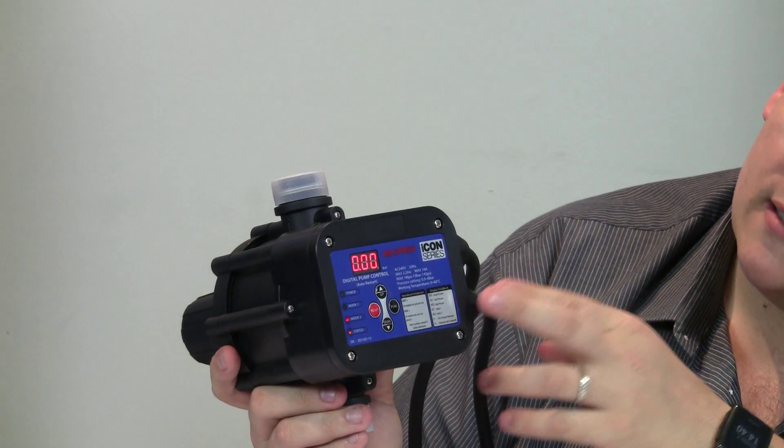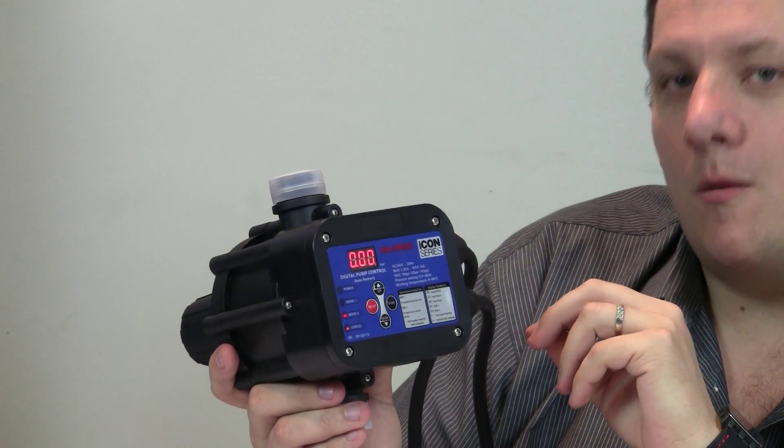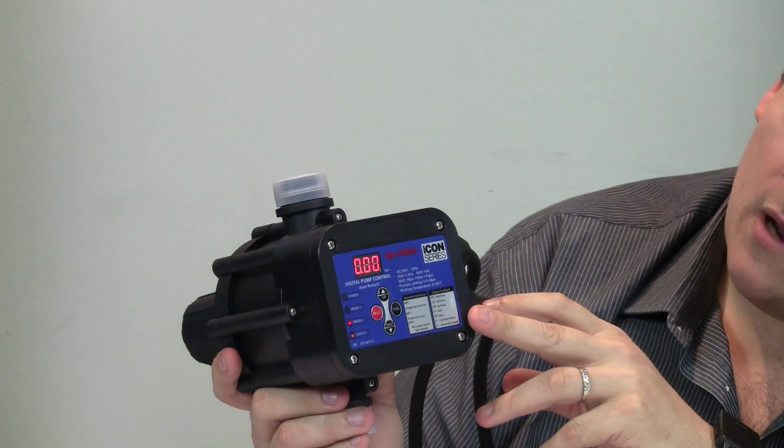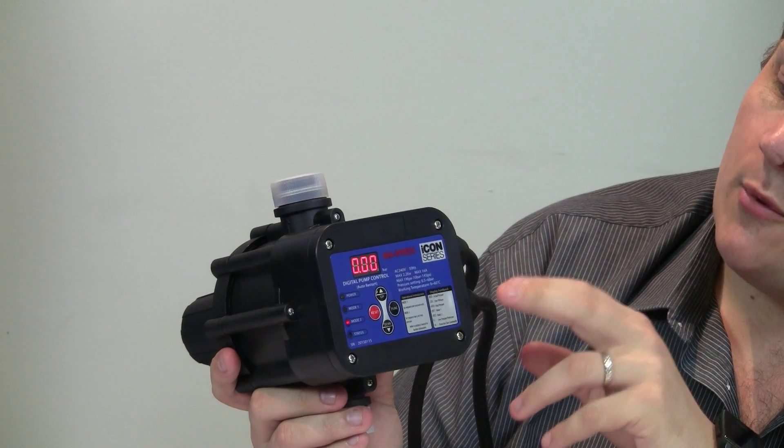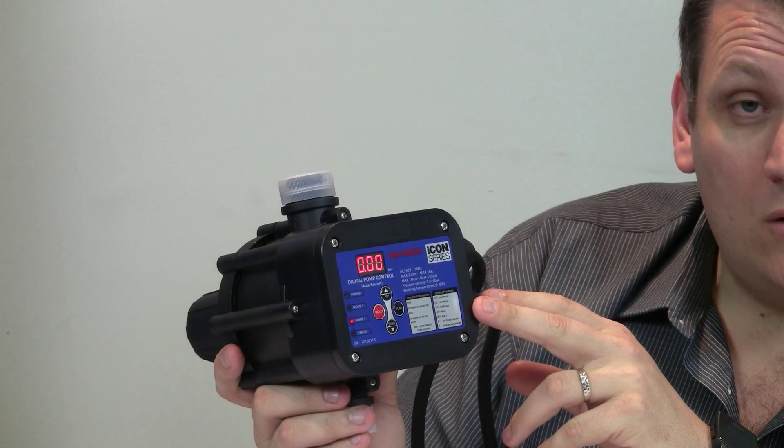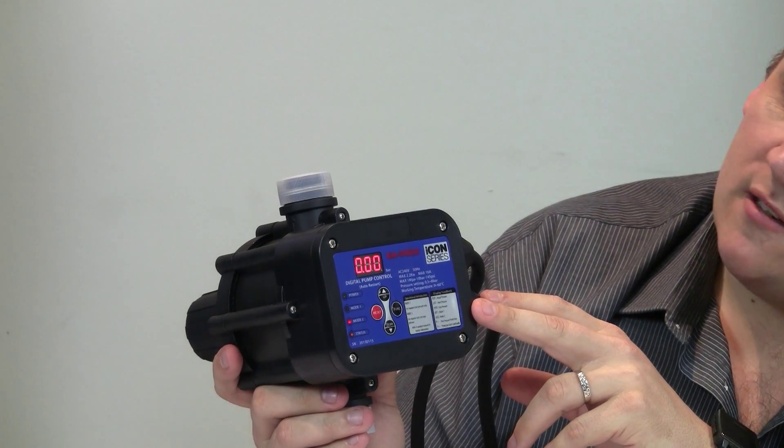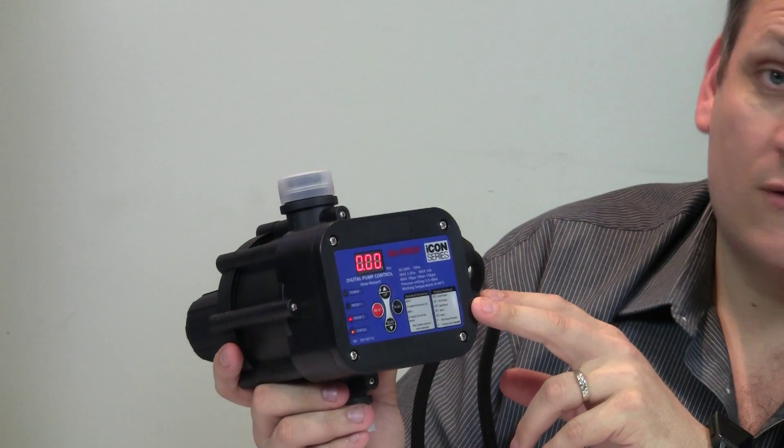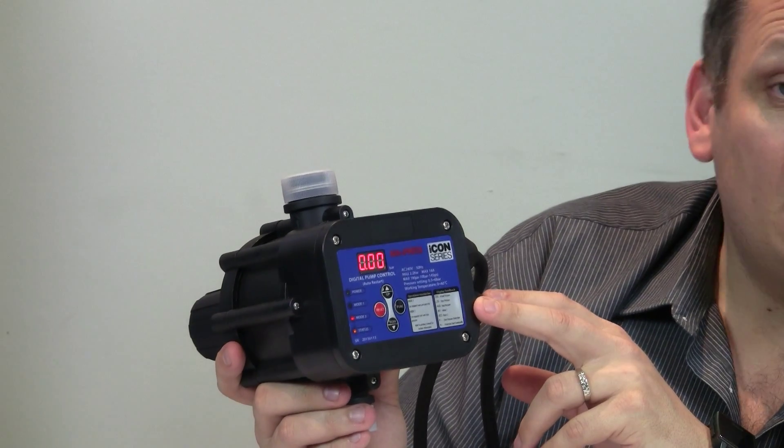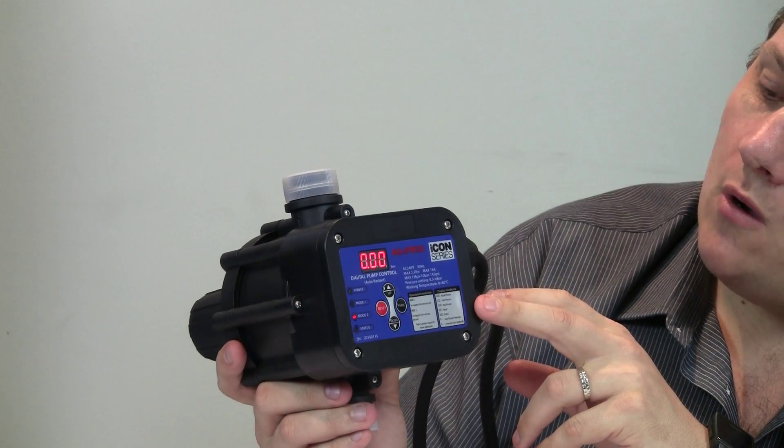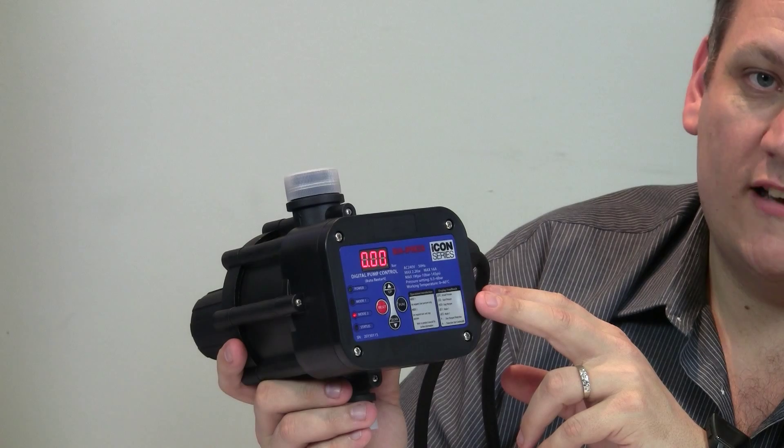The first of which is that it has two distinct operating modes. Mode 1 is operated as a standard pressure control with an adjustable cutting pressure down to 0.6 bar, meaning that this particular control can control a wide variety of pumps.